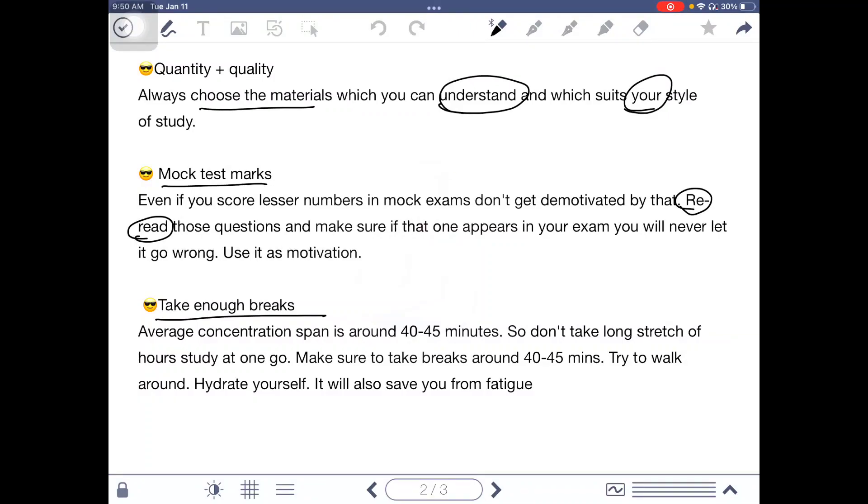Average concentration span is around 40 to 45 minutes for every human being. So don't take long stretches where you will sit and study for 2 hours, 3 hours together in one go, which is not good. Make sure to take breaks around 40 to 45 minutes. Try to walk around, hydrate yourself. It will also save you from fatigue and you will stay interested.